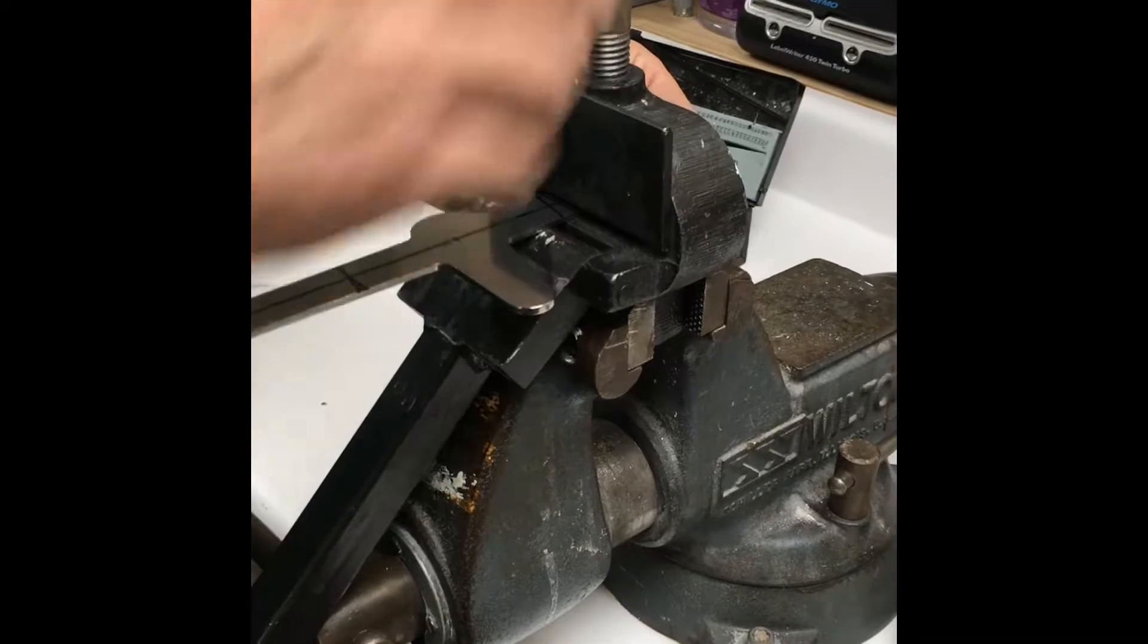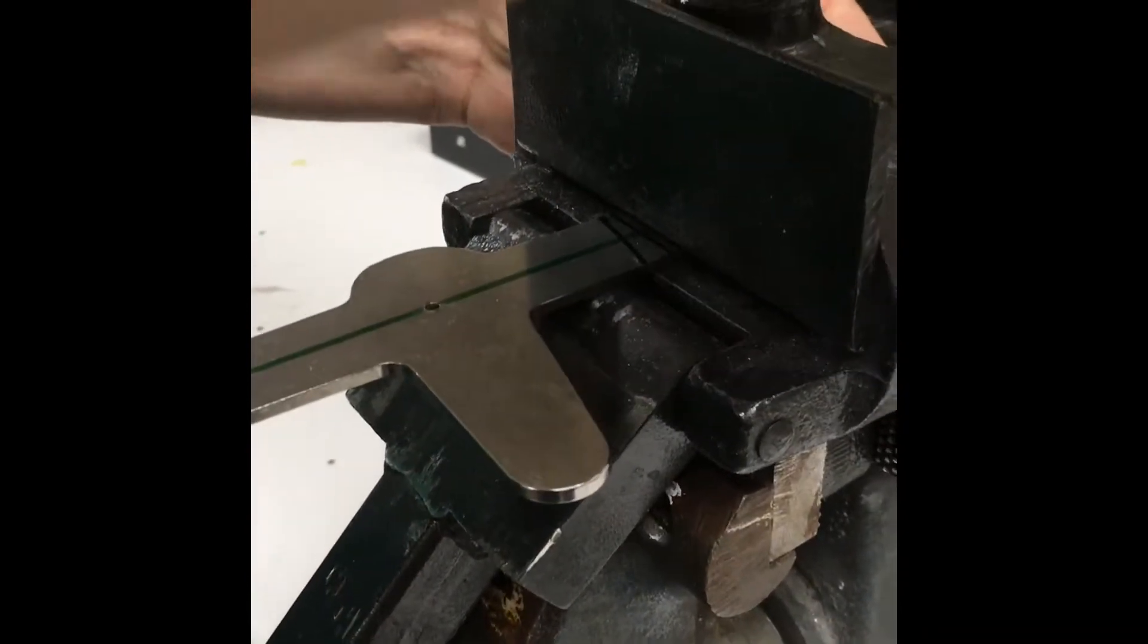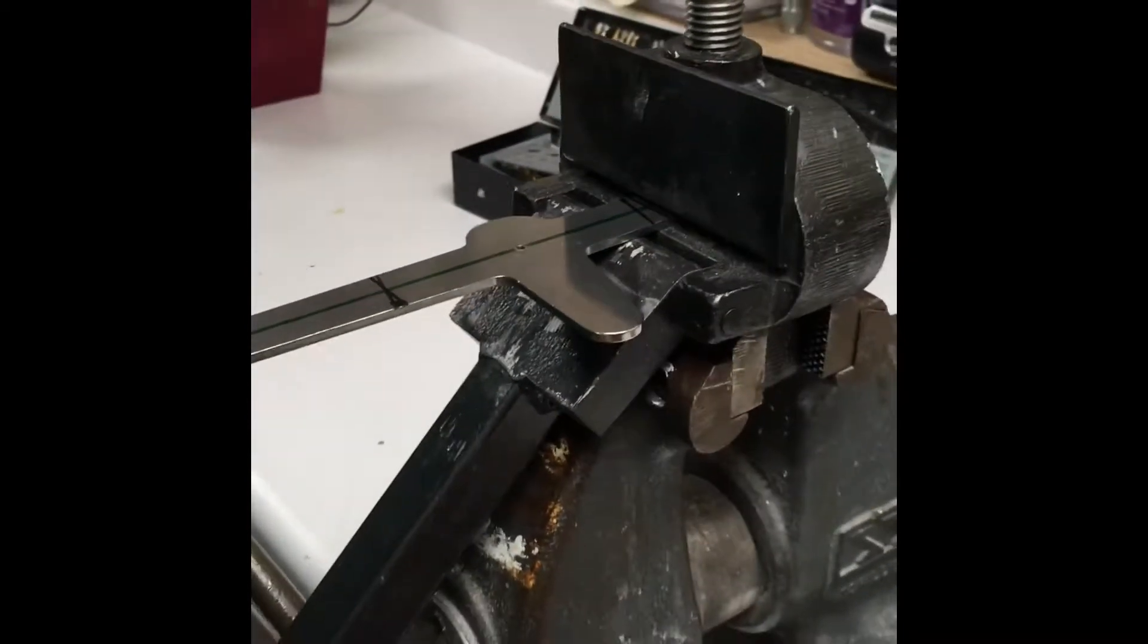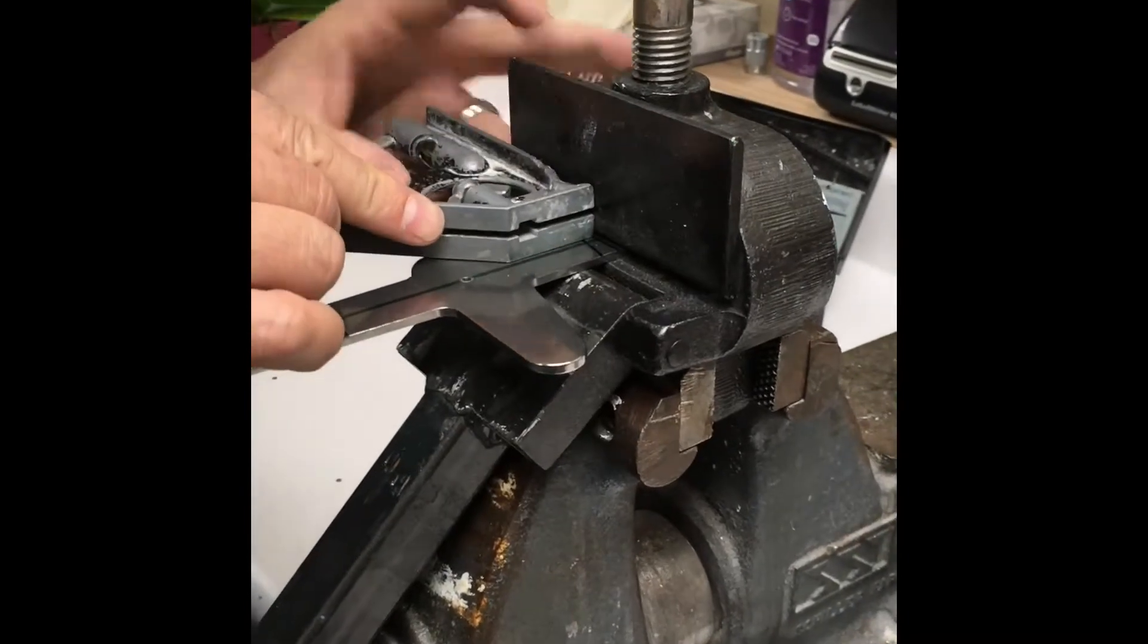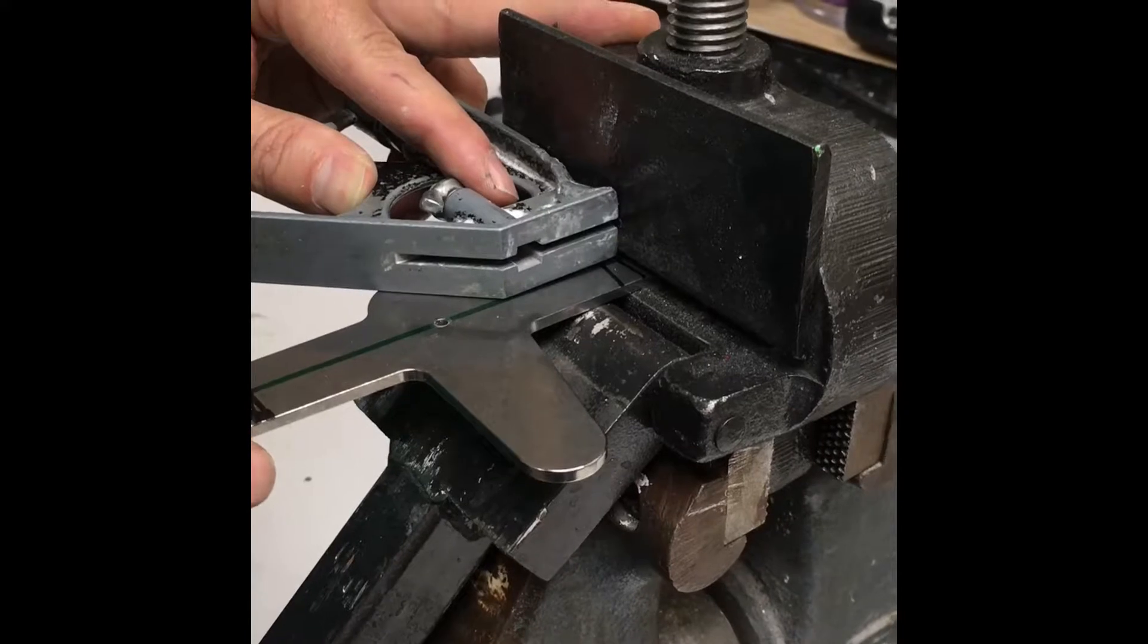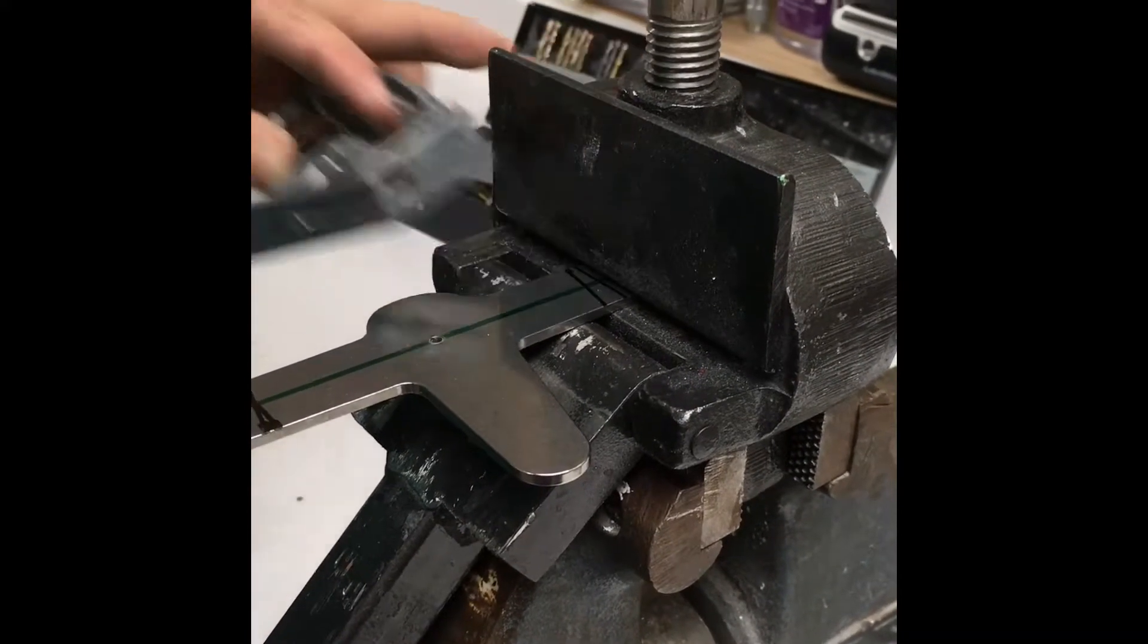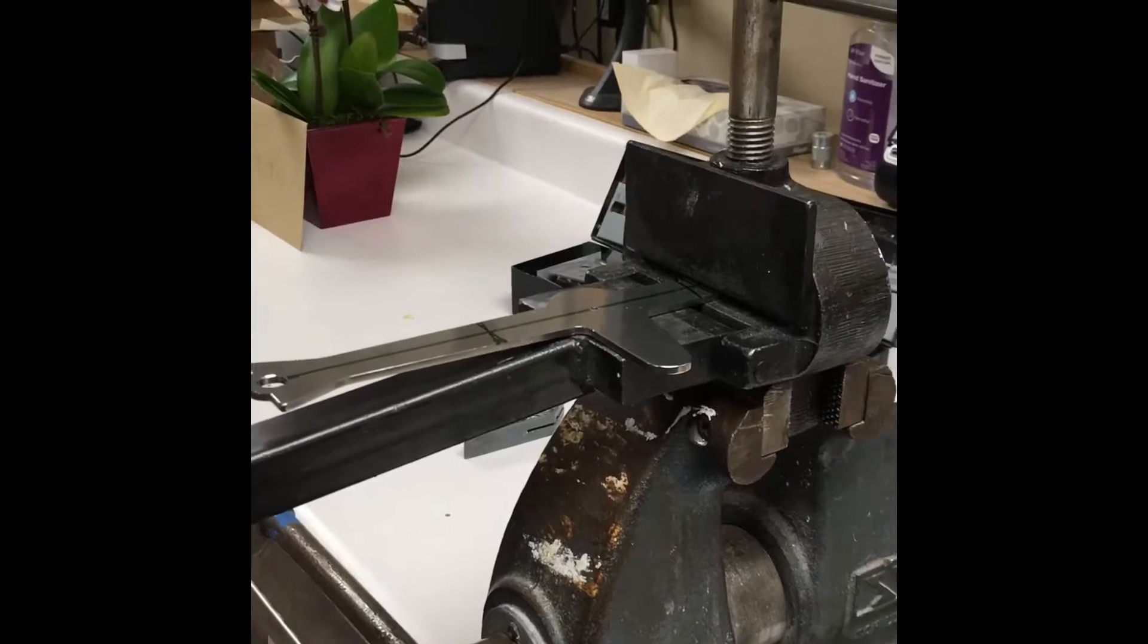We're going to put it on that line. But before we bend it, I'm going to make sure that this is square. Looks pretty square. Tighten that so it doesn't slip. And then we do our bend.